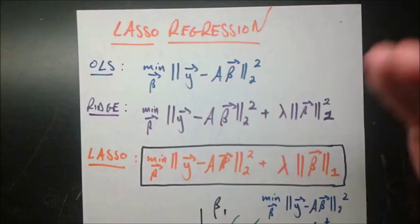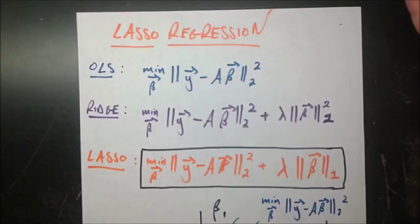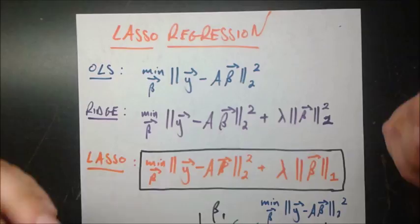So to fix that problem we used ridge regression which put a constraint on how big the betas can get. Again we're going to do the same kind of thing except instead of using the L2 norm we're going to use the L1 norm. To get the differences between the two norms you can watch the brief video right here on the different kinds of norms, basically the difference between an L1 norm and an L2 norm.